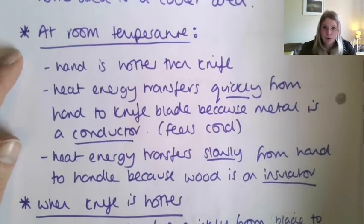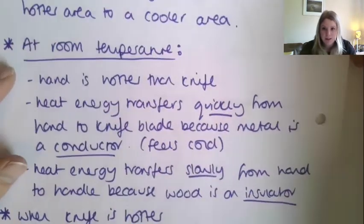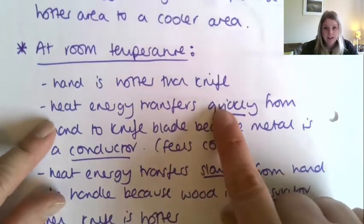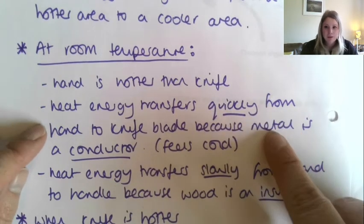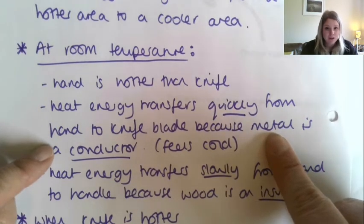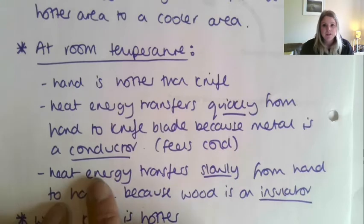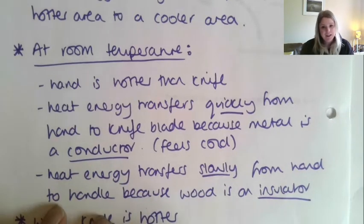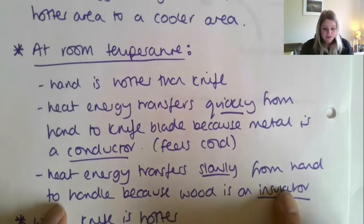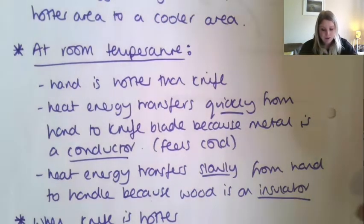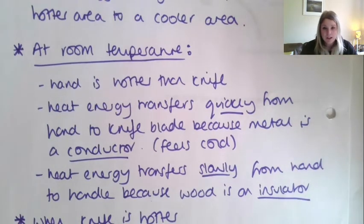At room temperature, for this diagram, your hand is hotter than the knife. So heat energy transfers quickly from your hand to the blade because metal is a conductor - that's why it feels cold. Then the heat energy transfers slowly from your hand to the handle because it is an insulator. That's why it doesn't feel as cold, because the heat energy isn't leaving your hand quite as fast. Pause and get that chunk written down.